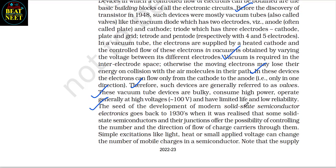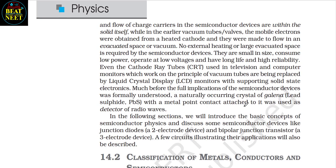The seed of the development of modern solid-state semiconductor electronics goes back to the 1930s, when it was realized that some solid-state semiconductors and their junctions offer the possibility of controlling the number and direction of flow of charge carriers through them. Simple excitations like light, heat or small applied voltage can change the number of mobile charges in a semiconductor. The supply and flow of charge carriers in semiconductor devices are within the solid itself, while in earlier vacuum tubes the mobile electrons were obtained from a heated cathode and made to flow in an evacuated space. No external heating or large evacuated space is required by semiconductor devices. They are small in size, consume low power, operate at low voltages and have long life and high reliability.